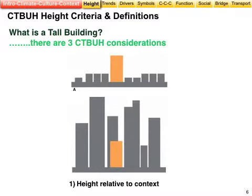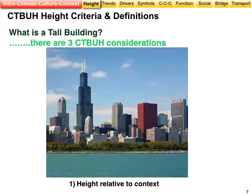The Council on Tall Buildings and Urban Habitat (CTBUH) have three main definitions, one of which is height relative to context. The smaller buildings here are undoubtedly tall if they were in Europe, but in Chicago there are a few which are much taller than their neighbors.